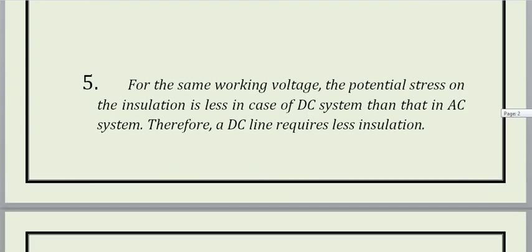Fifth advantage: for the same working voltage, the potential stress on the insulation is less in case of DC system. DC system के case में जो potential stress है वो insulation पर AC के relative कम होता है. यही वजह है कि corona discharge, जो electrical discharge है, वो भी कम होता है. इसका मतलब है कि DC line में कम insulation required होगी.